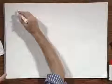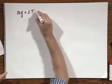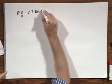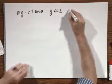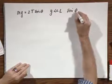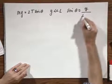Now, we'll continue with this problem. Mg equals 2T sine theta. And in case that y is much, much smaller than L, the sine of theta is approximately y divided by one-half L.